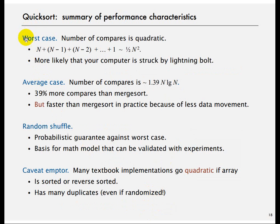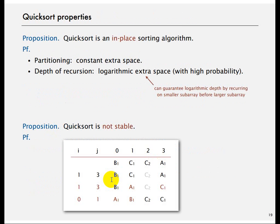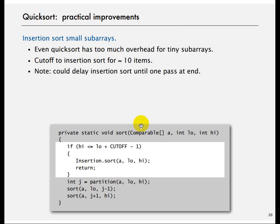The worst case happens when you already have a sorted array, but that is very unlikely. Quicksort does more compares than merge sort in some cases, but there is less data movement, which is what speeds things up. Importantly, if the array has many duplicates, even if it is randomized, it will be order N squared. There is a technique to avoid that. Quicksort is in-place but not stable, because you make large moves.